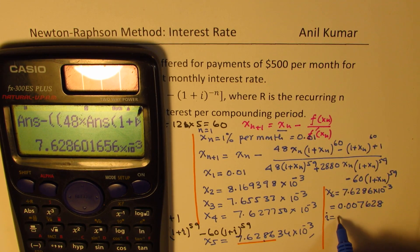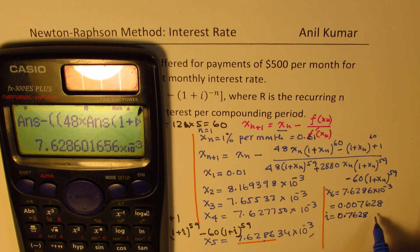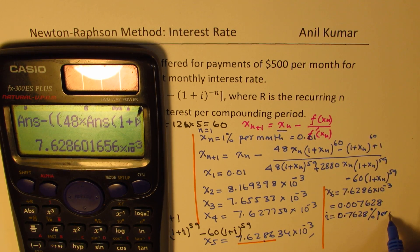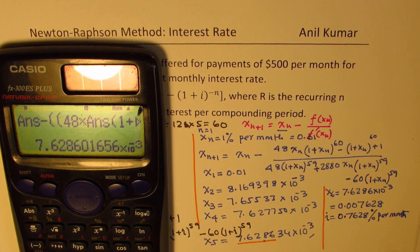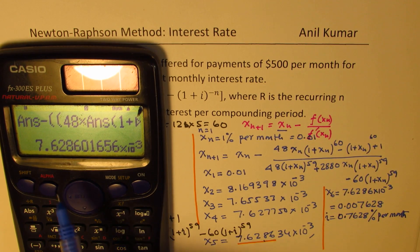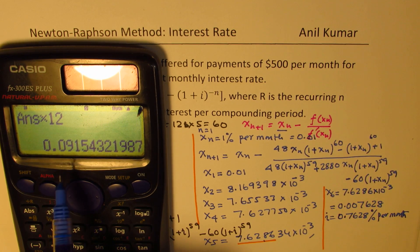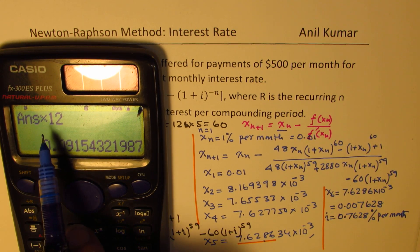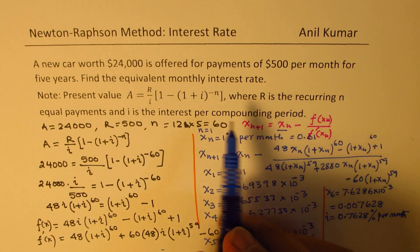Multiplying by 100 to express as a percentage, we get 0.7628% per month. If you want the annual interest rate, multiply by 12, which gives approximately 9.15% per annum. But since the question asked for the equivalent monthly interest rate, our answer is 0.7628% per month.